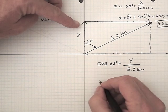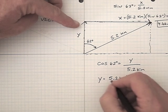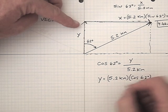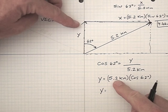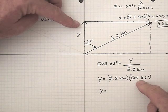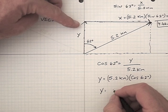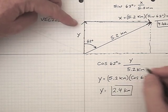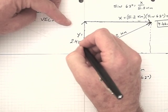Solving for y, we have y equals 5.2 kilometers multiplied by the cosine of 62 degrees. With the help of my calculator, I can see that 5.2 kilometers multiplied by the cosine of 62 degrees is 2.44, which rounds off to 2.4 kilometers. So the y component is 2.4 kilometers.